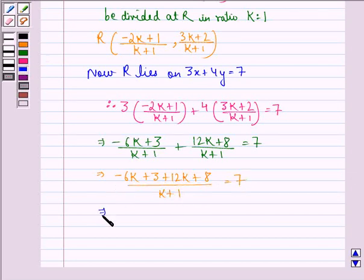This implies 6k plus 11 is equal to 7k plus 7. This implies k is equal to 4.